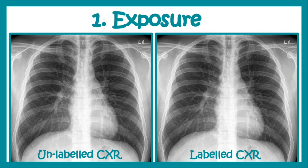First we check for the exposure — whether the exposure has been correct or not. We look for the lower thoracic vertebrae visible on the chest x-ray. On the left hand side, the boundaries of the lower thoracic vertebrae are barely visible. If they are barely visible, that points towards a proper exposure. If the exposure is more, there will be a more clear view of those boundaries, and in case of less exposure the boundaries won't be visible clearly.